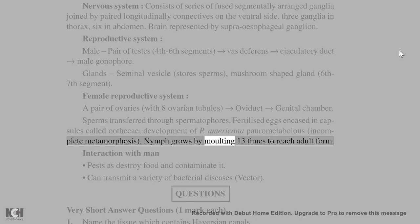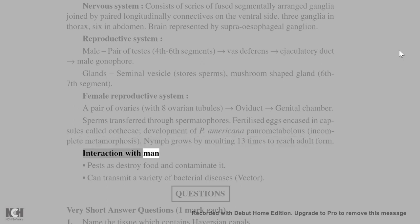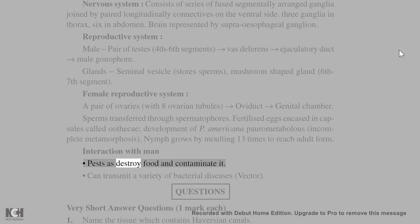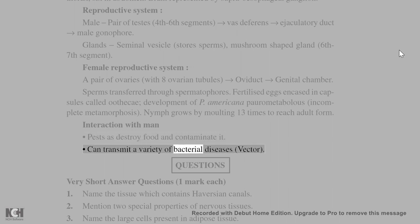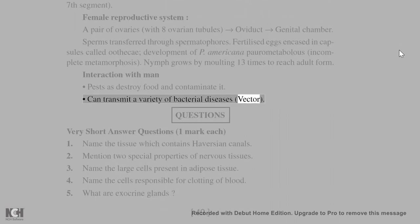The nymph grows by moulting 13 times to reach adult form. Cockroaches interact with humans as pests, destroying and contaminating food, and can transmit a variety of bacterial diseases, acting as vectors.